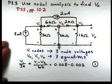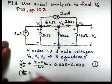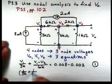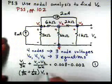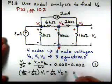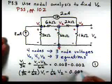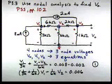Let's simplify that a little bit, just collect terms. So now we rewrite this. We'll have 1 over 3K plus 1 over 6K times V1 minus 1 over 6K times V2 is equal to 0.006. So there's our first equation.